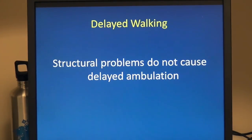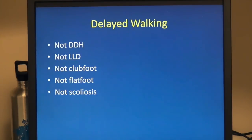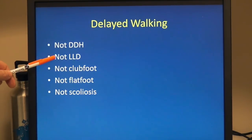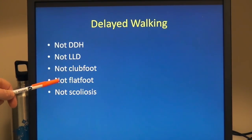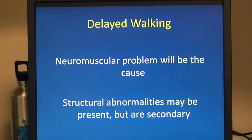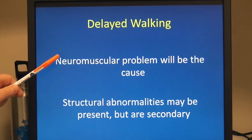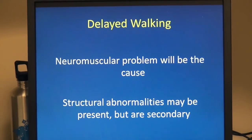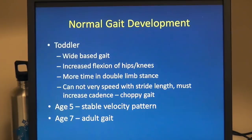One thing I'd like to bring up is that structural problems don't cause a delay in ambulation. Hip dysplasia, limb length discrepancy, club feet, flat feet, scoliosis — none of these structural problems will cause a delay in walking. They may be associated, but underneath it all, a neuromuscular problem is most likely going to be the cause of a delay in gait. Structural abnormalities may be present, but they're secondary.